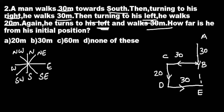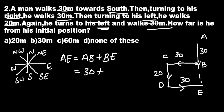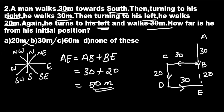We have to find out how far E is from his initial position. The initial position is A and the final position is E. AE is equal to AB plus BE. AB is 30 meters, and BE is equal to CD, which is 20 meters. Therefore AE equals 50 meters. The answer is D, none of these.